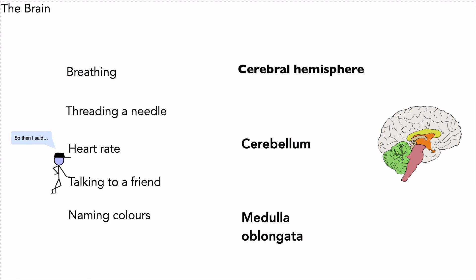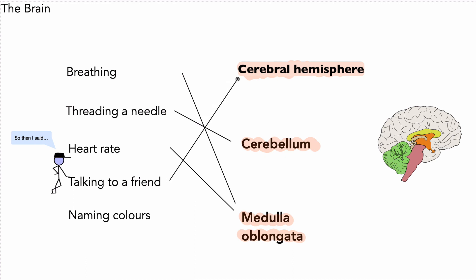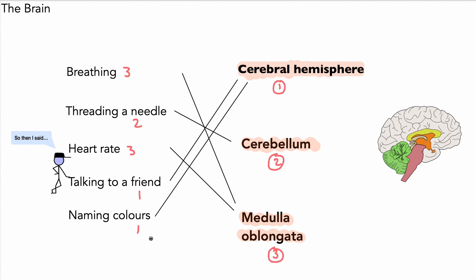So here we are at the end with the test we said we were going to do. The cerebral hemisphere, the cerebellum, and the medulla oblongata are listed with some tasks — pause here to see if you can match up the tasks with the part of the brain. Breathing and heart rate are controlled by the medulla oblongata. Threading a needle would be the cerebellum. Talking to a friend and naming colours both require the cerebral hemispheres. So there we have it — studying the brain, functions of some parts of the brain, and issues with treating brain and spinal cord disorders, all for GCSE Science and GCSE Biology.